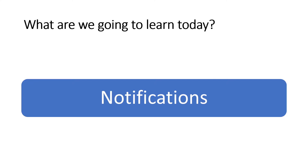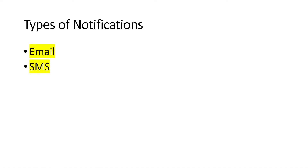Based on this concept, inside ServiceNow there are also different ways we can get notifications. The three types are: email notification, SMS notification, and meeting invitation notification. These are the three types we can create or receive inside ServiceNow.